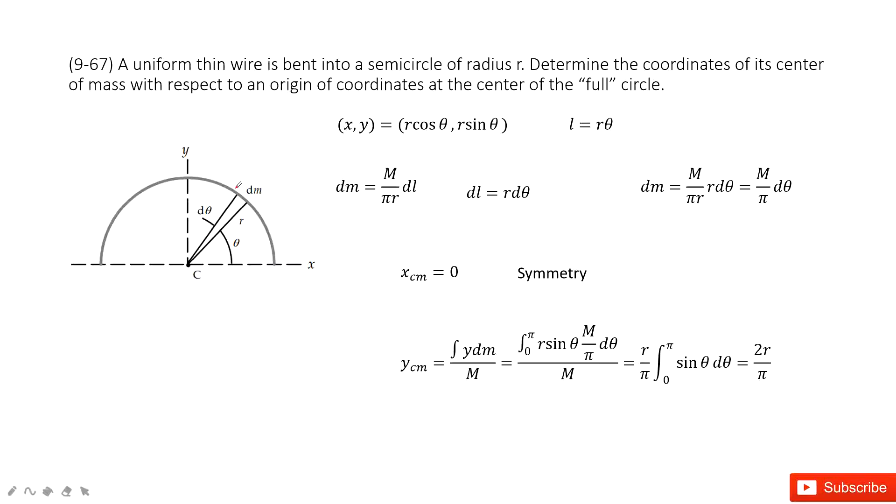So first thing we look at is this small fraction. We call it dm. And for dm, how can you determine it? We can consider its density times its length.